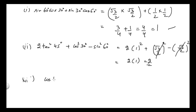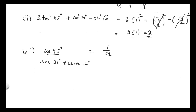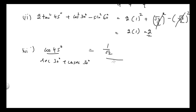Now we have the third part: cos 45° divided by (sec 30° + cosec 30°). The value of cos 45° = 1/√2, the value of sec 30° = 2/√3, and the value of cosec 30° = 2. We take √3 as the LCM for the denominator.